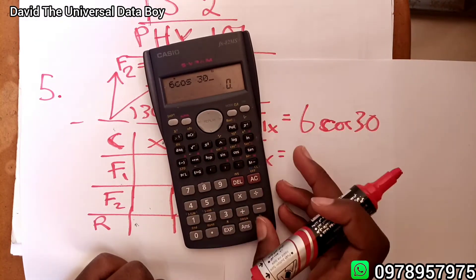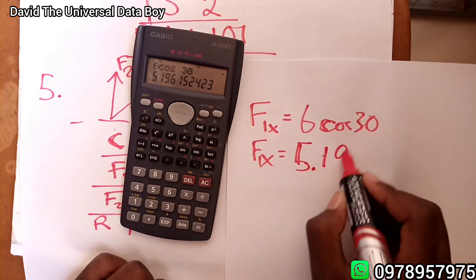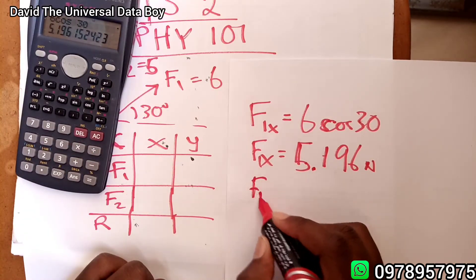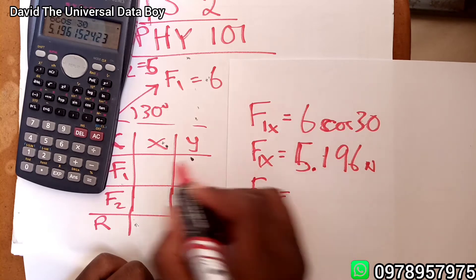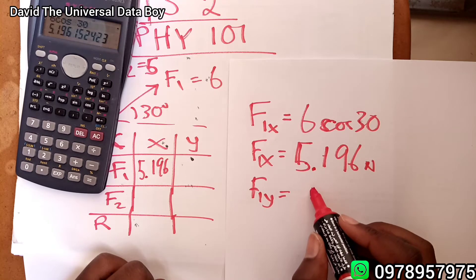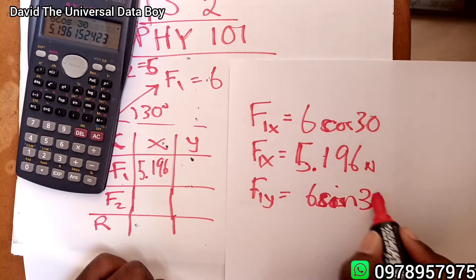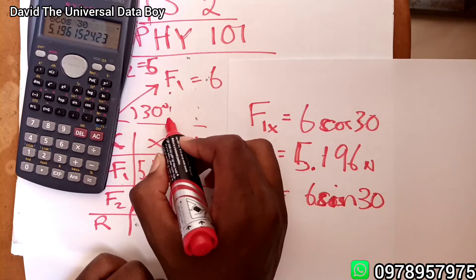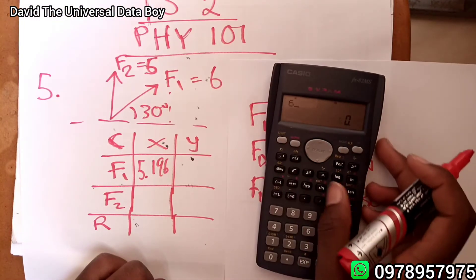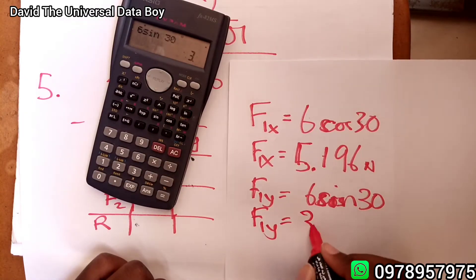So F1 in the x is equal to 6 cosine 30, which is 5.196 newtons. Then F1 in the y is given by 6 sine 30 — we use sine because y is opposite to the 30 degrees. Since sine 30 is one-half, 6 sine 30 equals 3 newtons.